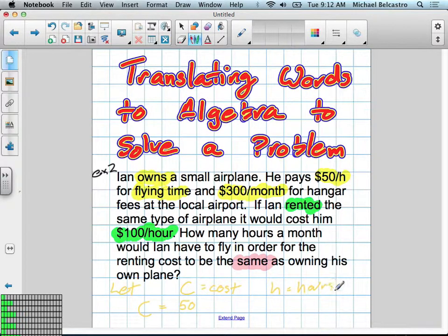If you're more comfortable using X and Y, especially because you might want to graph things eventually, that's fine. But any letter works because they're just working with variables. So his cost is $50 an hour, so 50 times H, and then $300 a month for hangar fees.